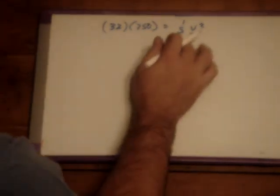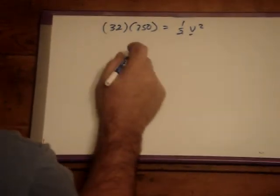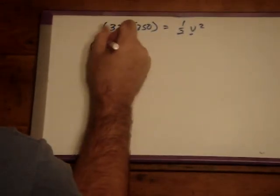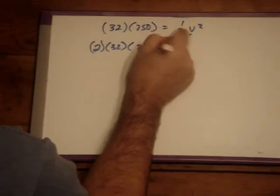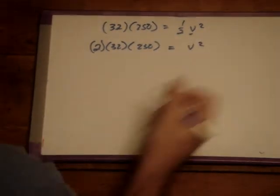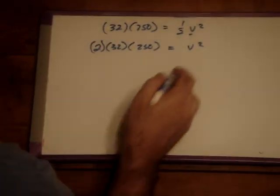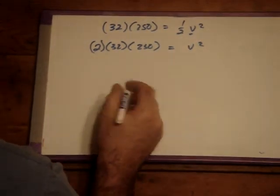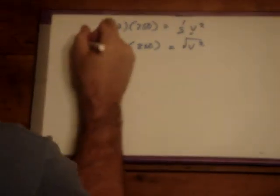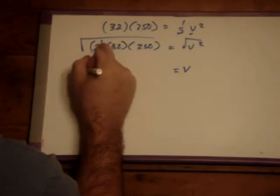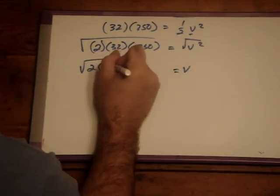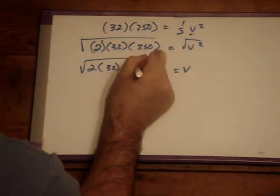Let's go ahead and solve this for V. So, we'll go ahead and multiply both sides times 2. So, I'll get 2 times 32 times 250, and this is equal to V squared. And then, going ahead to solve this for V, let's take the square root of both sides. So, I get V on this side, and I get the square root of 2 times 32 times 250.